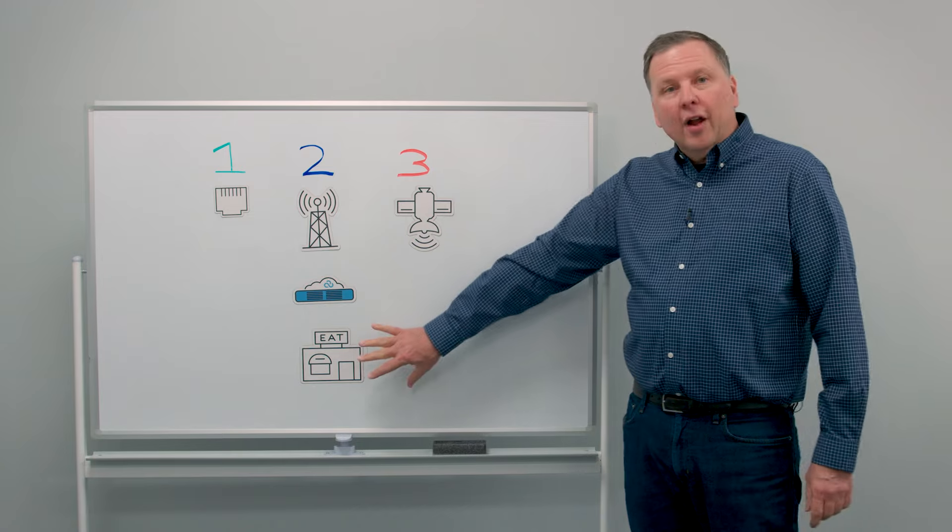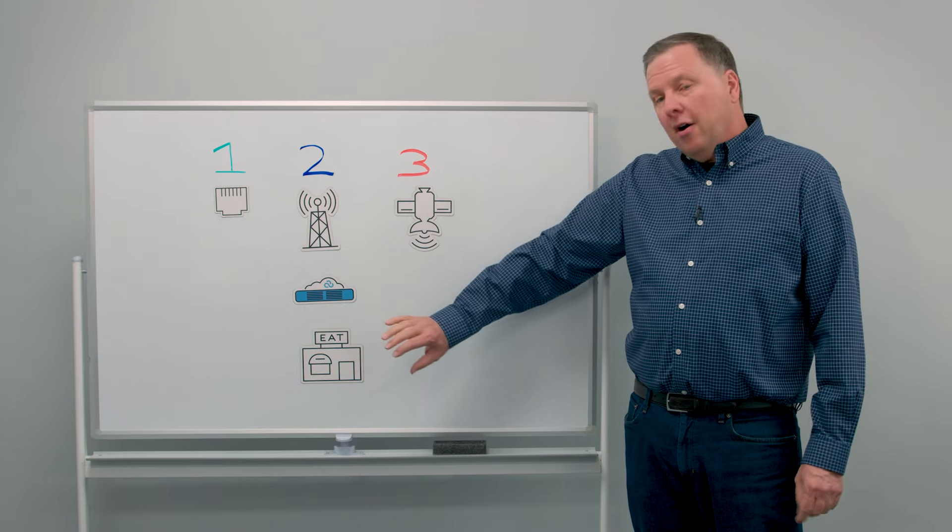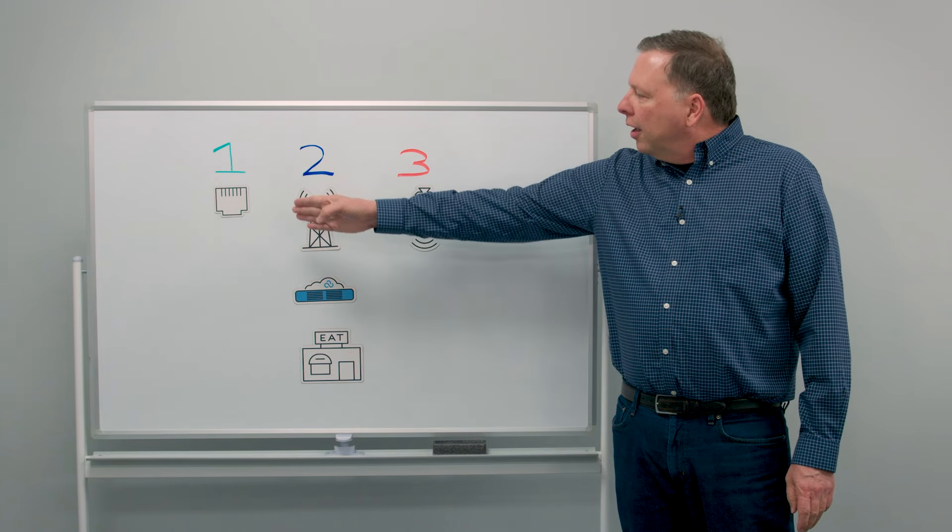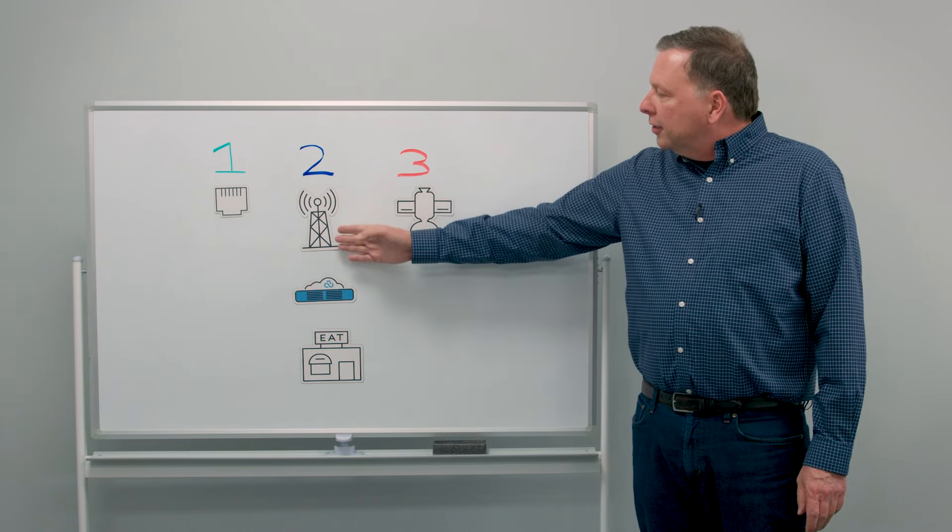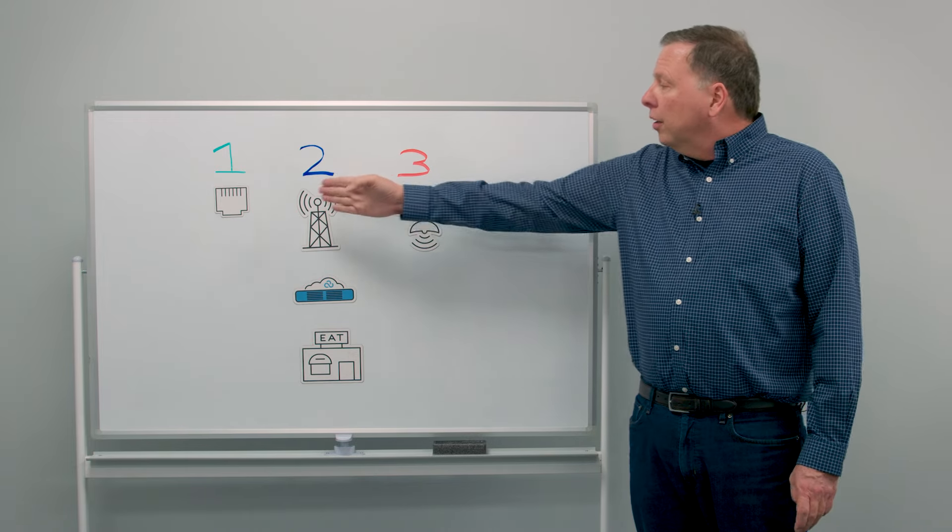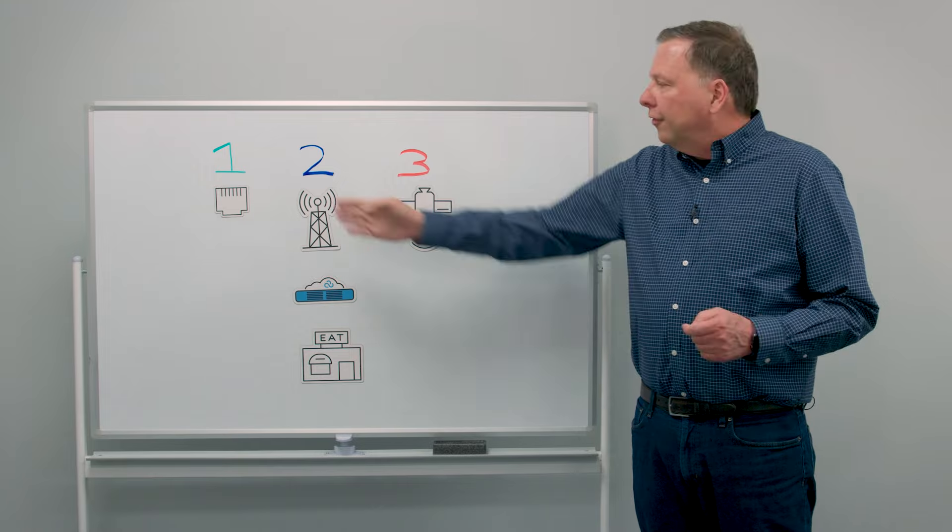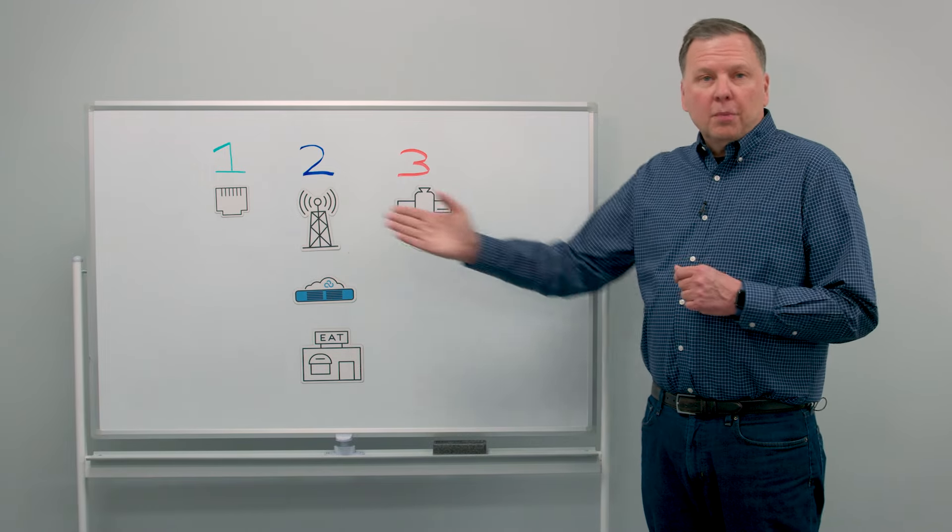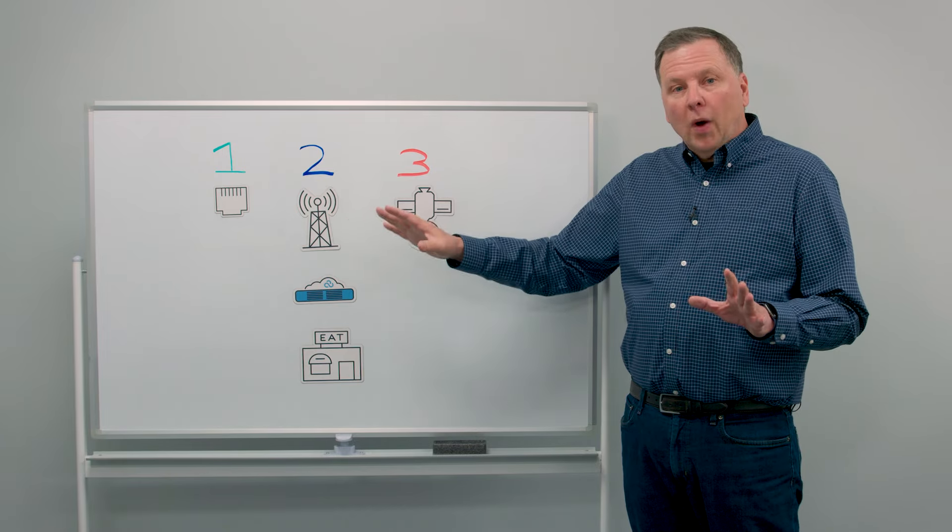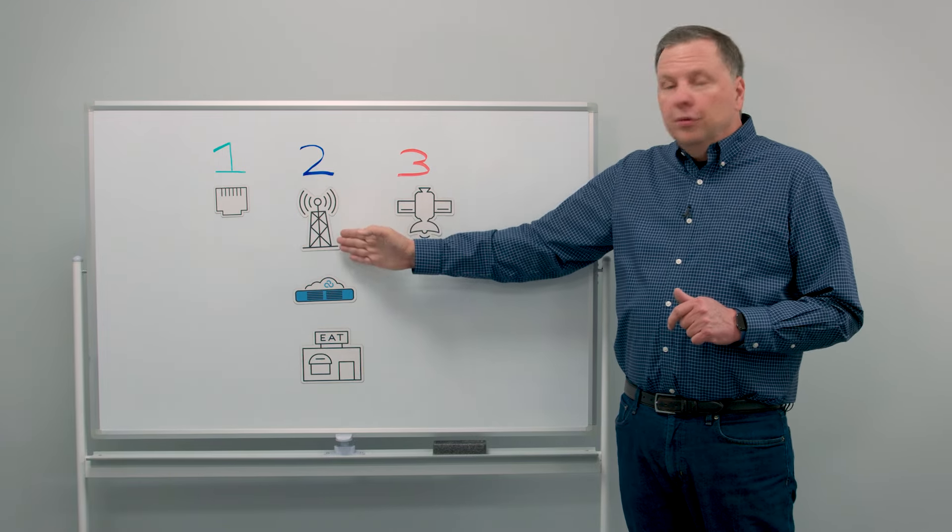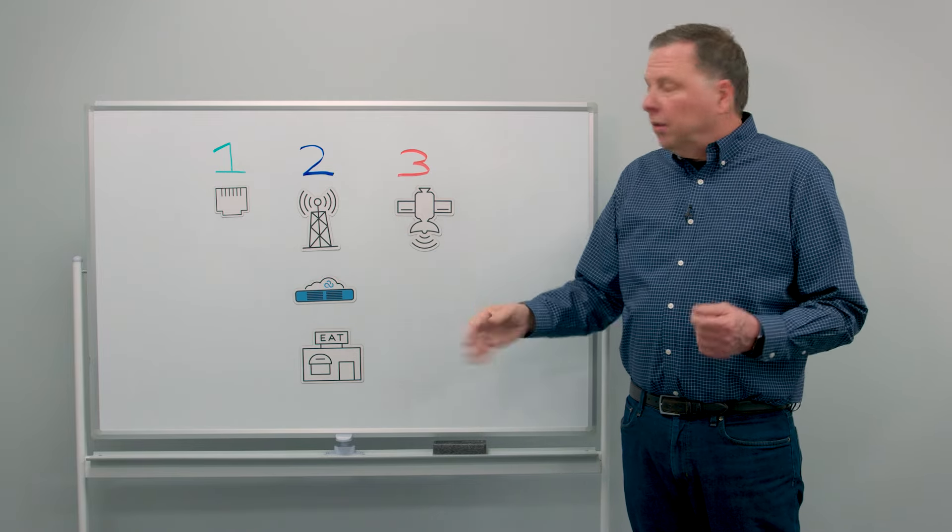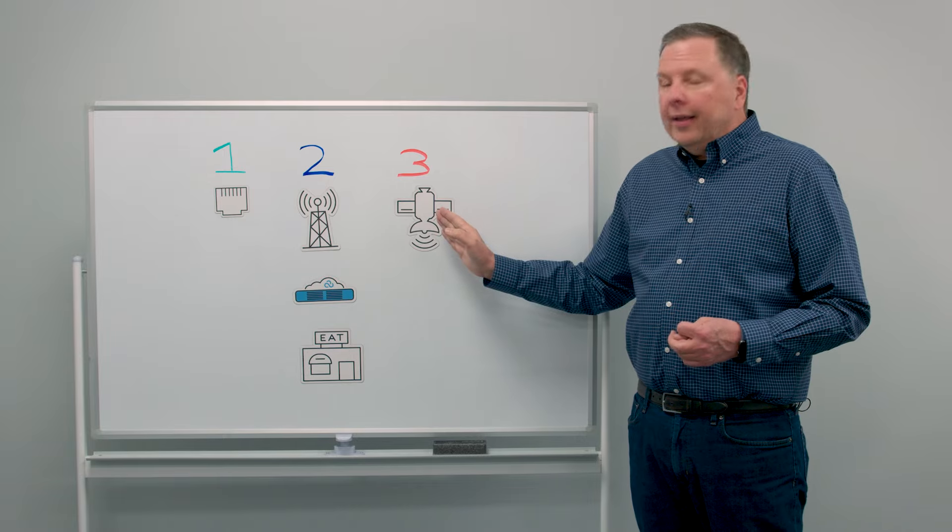Here we've got a restaurant that wants to be online 24-7 and we're using wired connectivity, cellular connectivity, and satellite connectivity. Now normally we'll be using the wired line for everything, but if there's a problem with the wired line, for example a construction problem that cuts the wire, we'll fail over to the cellular link. And if for some reason the cellular link becomes unavailable, we'll fail over to the satellite link.